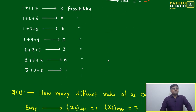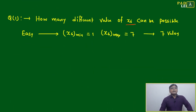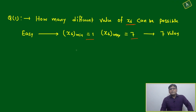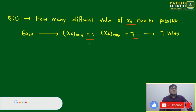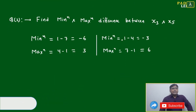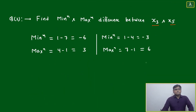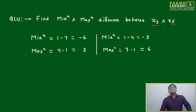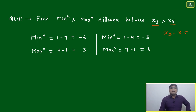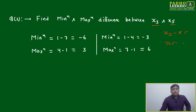Question: how many different values of x6 are possible? Since any value can be equal or different, x6 minimum is 1 and maximum is 7, so seven total values are possible. Next question: find the minimum and maximum difference between x3 and x5. Note that order is not specified in the question — so we must consider both x3 minus x5 and x5 minus x3. This is a key catch; taking only one order gives the wrong answer.